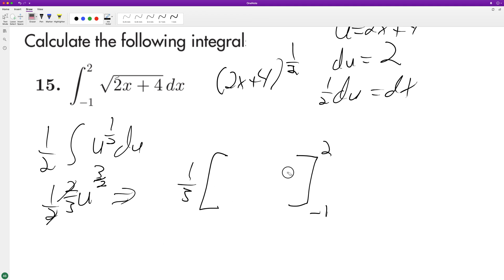Actually, that's not right. I'm almost there. I'll get this. I was looking up at this. I shouldn't have done that. I should have been looking down at the 3 halves. So 2x plus 4 raised to the 3 halves.